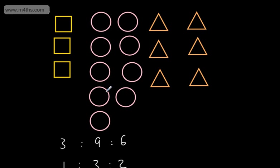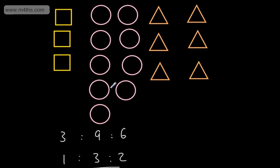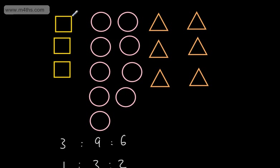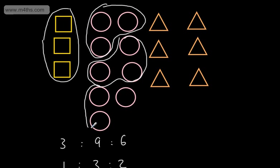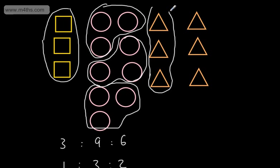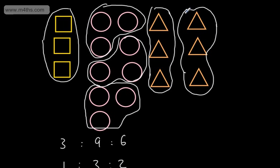And of course we could split these up into threes if we wanted. If you look at this, we could have one part here, then two parts, and then another one — collecting these up in threes, we can see that this is going to be in a one to three to two ratio. So nice and straightforward, we're just comparing the parts.